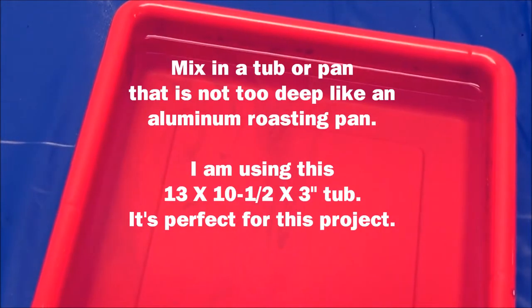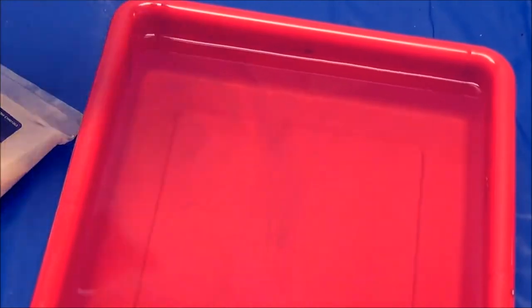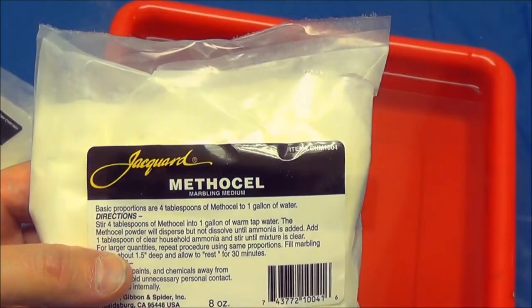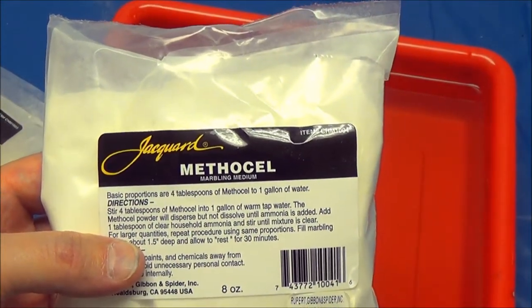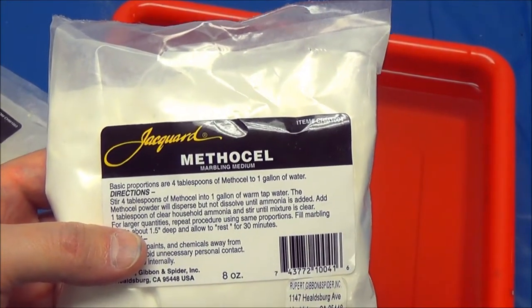The first thing you need is a float base or size. The most commonly used are carrageenan and methicell. Methicell is less expensive, quicker to make, and lasts longer without spoiling. So let's use it.